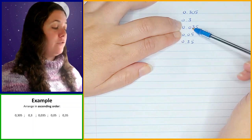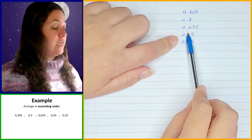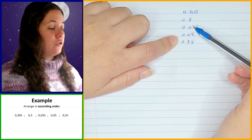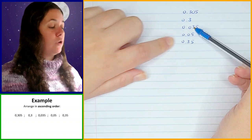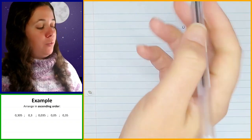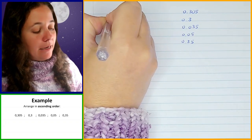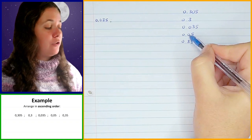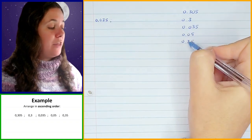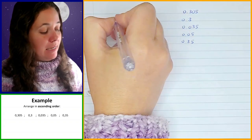Because I'm going from smallest to biggest, I'm going to focus on these two first — 0.035 and 0.05 — because I know they are smaller than the others. Now I need to determine which of these is the smallest. So I compare the hundredths position: this one has got a 3 and that's got a 5. So 0.035 is the smallest of all of them and goes first.